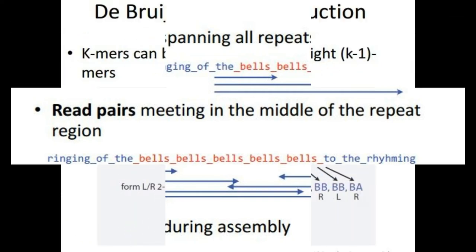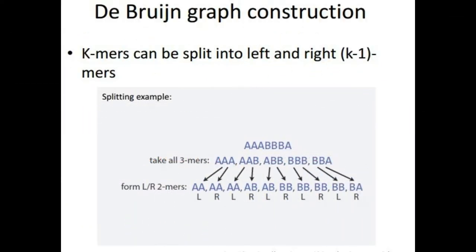The second assembly paradigm is de Bruijn graph where we have a k-mer, a substring of length k where we can split it into a left and right k-1 mer. So a node is a k-1 mer where the arc or directed edge is an overlap of k-2 between two k-1 mers.